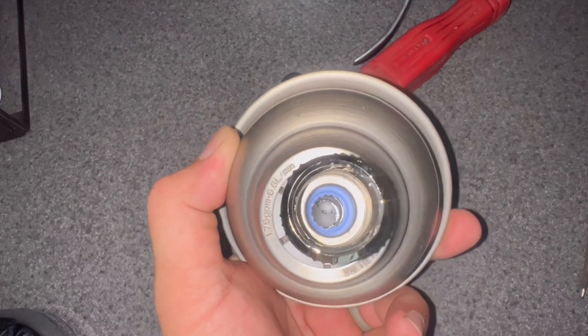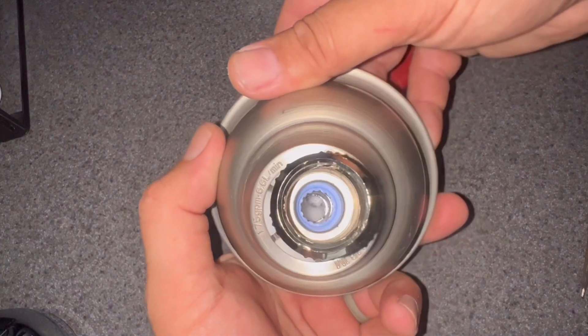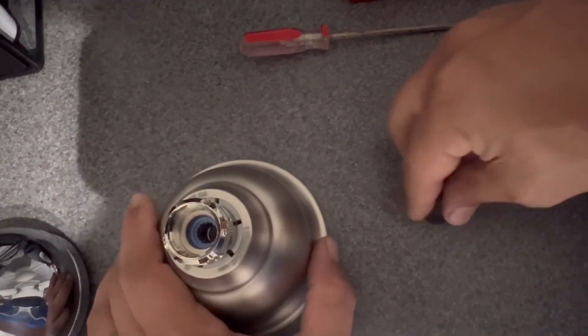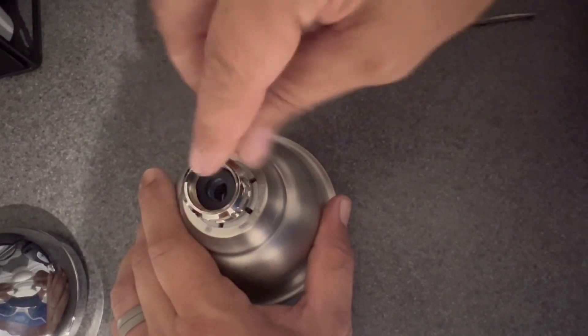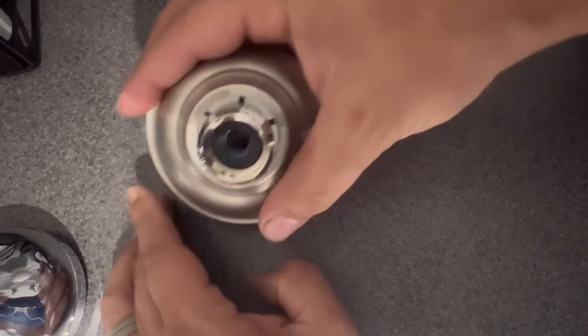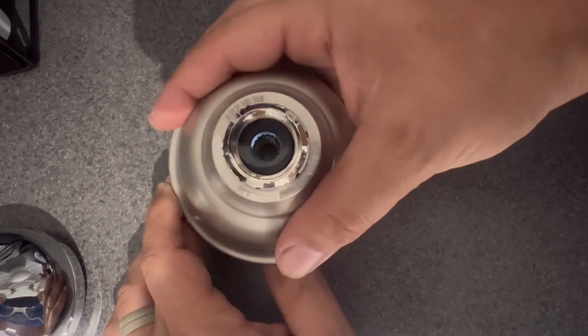Now sometimes it won't actually come out and it'll stay in there. If that's the case, don't worry about it too much. It shouldn't really cause a problem. As long as you get it broke free to where it's no longer restricting the water, you're good. Then you just put back in the washer and install your shower head and you should have better pressure now.